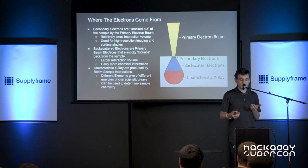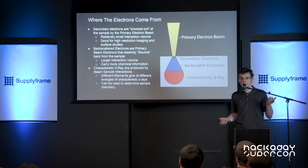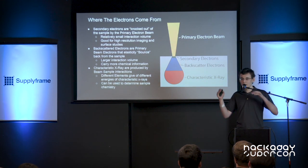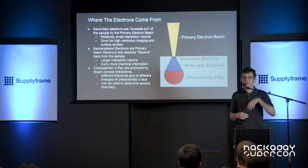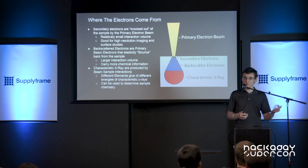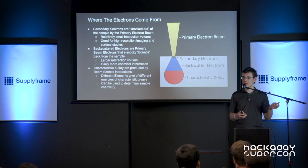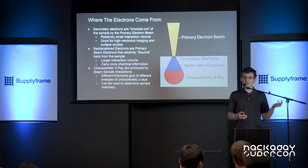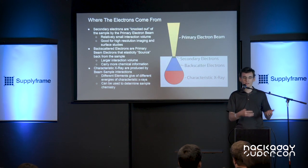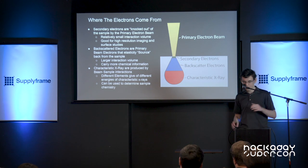The last thing we're going to look at is characteristic X-rays. When you ionize something and the ion falls back down to its ground state, it gives off an X-ray. In the case of most materials, it gives off a characteristic X-ray that, using a special sensor, we can actually determine what material is giving off those X-rays. Therefore, we can determine what material the electron beam is hitting, which is useful in a variety of different fields.